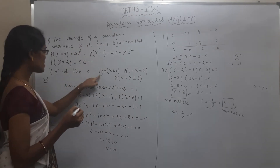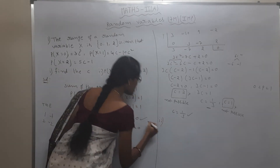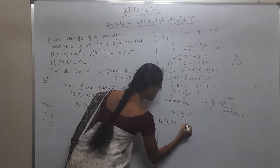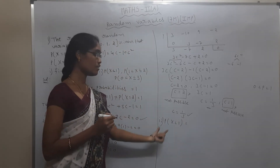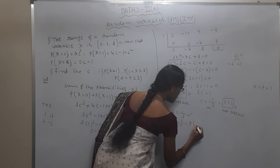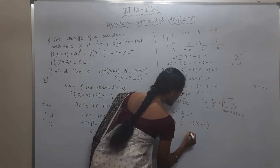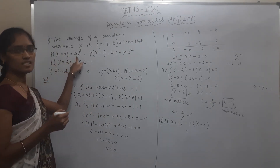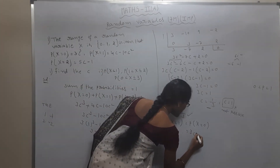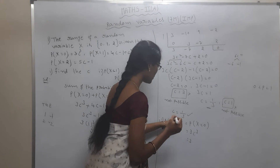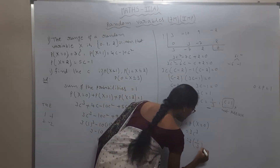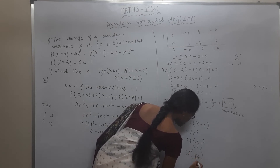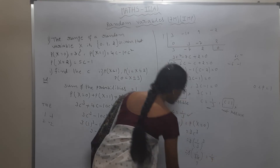Second question: find P(X < 1). P(X < 1) means X = 0 only. So P(X < 1) = P(X = 0) = 3c³ = 3 × (1/3)³ = 3 × (1/27) = 1/9.